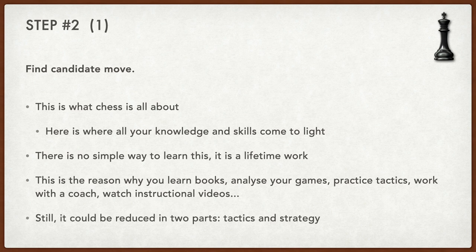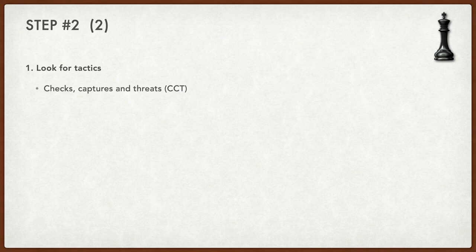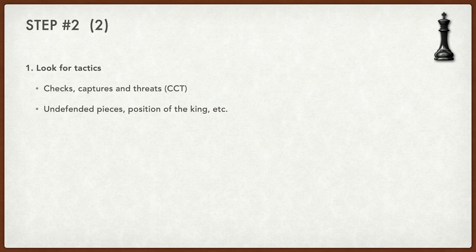This process can be broken into two parts: look for tactics and look for strategy. Tactics are more important than strategy because if you have a tactical opportunity the game can be over very quickly. To look for tactics, use the typical approach: look for forcing moves — checks, captures and threats, the famous CCT. Look for undefended pieces of your opponent; maybe you can attack them or find some tactics around them. Also consider the position of your opponent's king — can you exploit a bad king position?